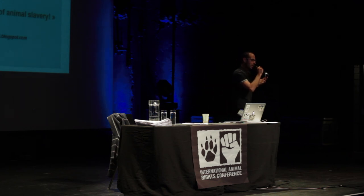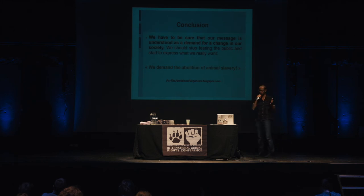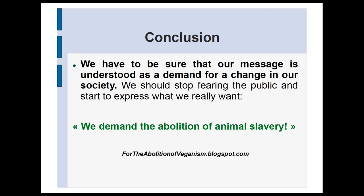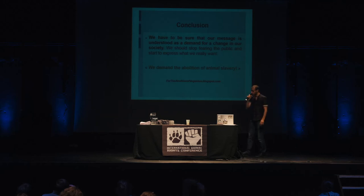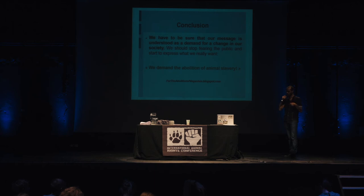If we want to be sure that our message is understood as a demand for change in society, we have to make a claim and ask for what we really want. We should start making claims — something we really think inside ourselves — and we have to stop fearing the public and express: 'We demand the abolition of animal slavery.' I have also made papers summarizing the arguments with more detail, and a final chapter on strategies we can use to bring these claims into public opinion debate.